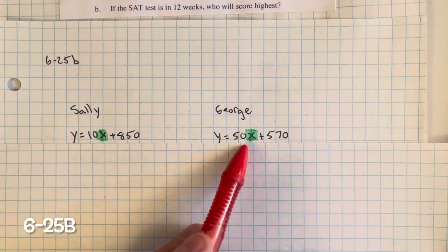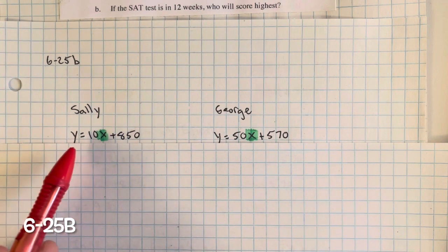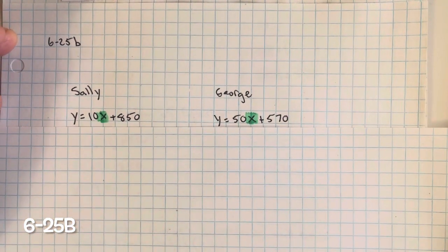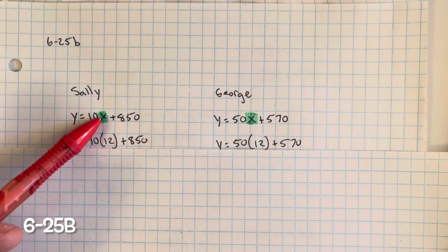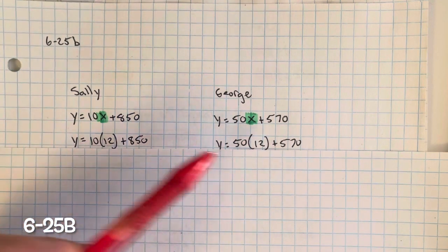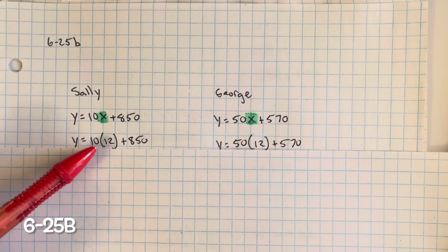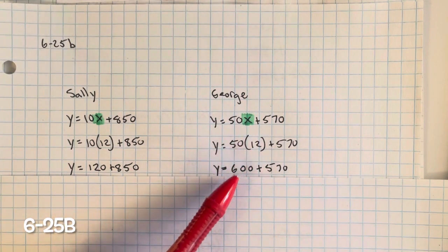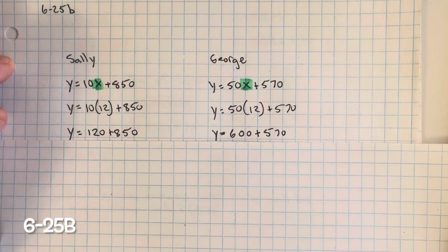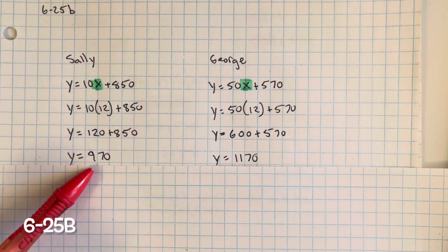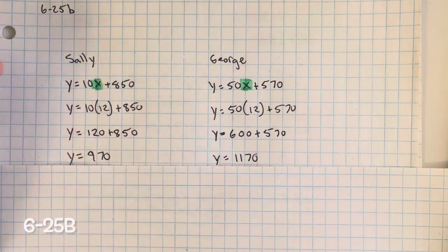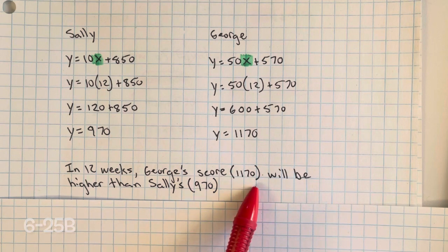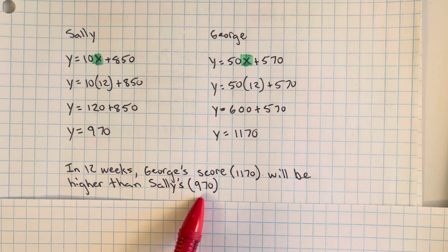We're going to take Sally and George's equations from the previous problem. X represents the number of weeks. We need to find out in 12 weeks who will have the highest score, so we're going to substitute x with 12. Solving both equations: 10 multiplied by 12 is 120, and 50 multiplied by 12 is 600. Simplifying: 120 plus 850 is 970, and 600 plus 570 is 1170. So in 12 weeks, George's score will be 1170, which is higher than Sally's score of 970.